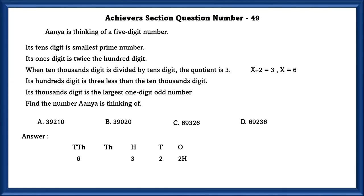Its thousands digit is the largest one digit odd number. The largest one digit odd number is 9. Find the number Anya is thinking of. The number Anya is thinking of is 69,326. That is the C option.